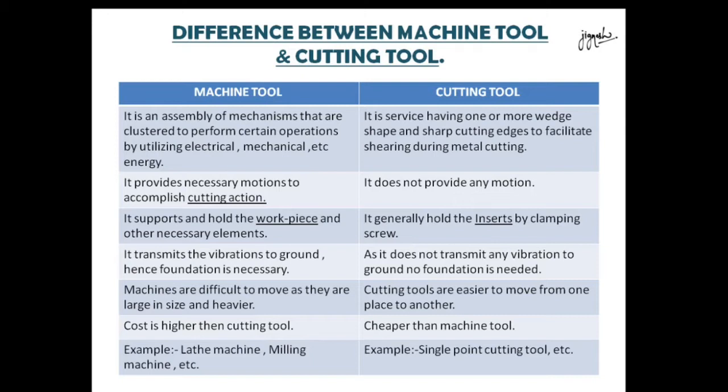The first difference is about the definition. A machine tool is an assembly that is joined to perform certain operations such as cutting, turning, etc., by utilizing available energy in different forms. While the cutting tool's purpose is to remove excess or irregular material to convert it into a desired form by shearing action.